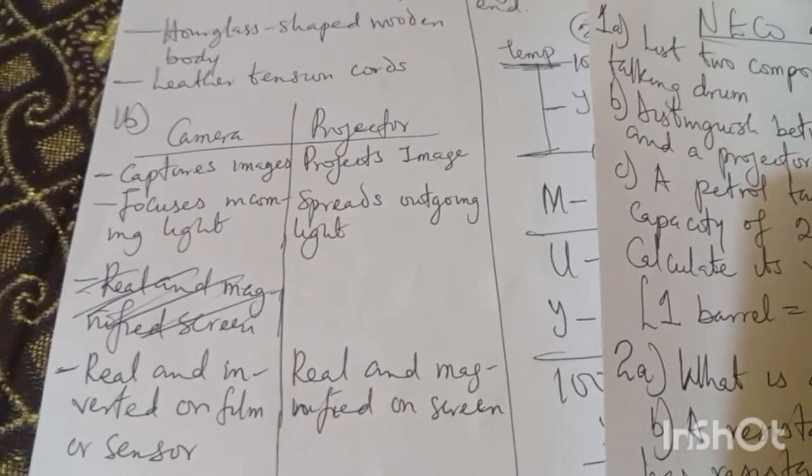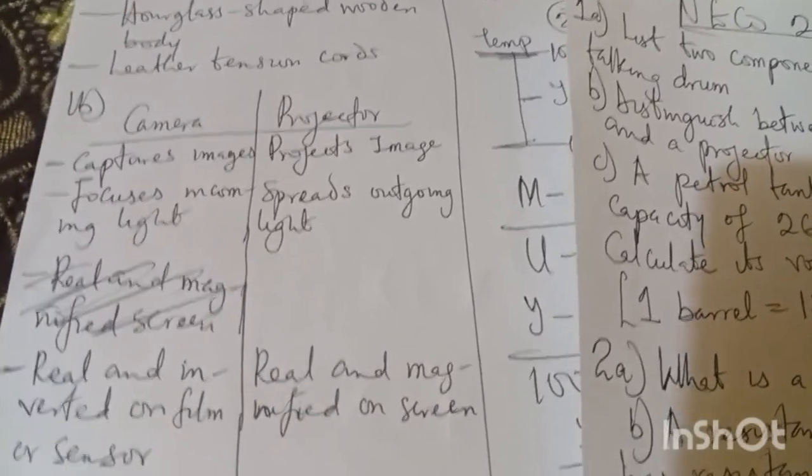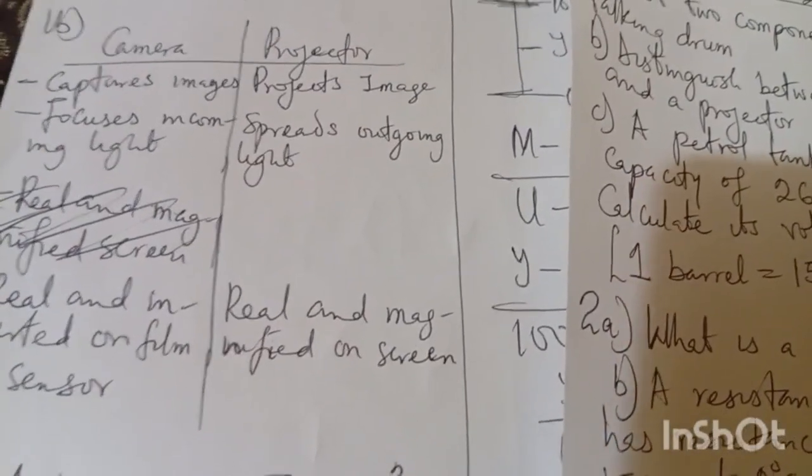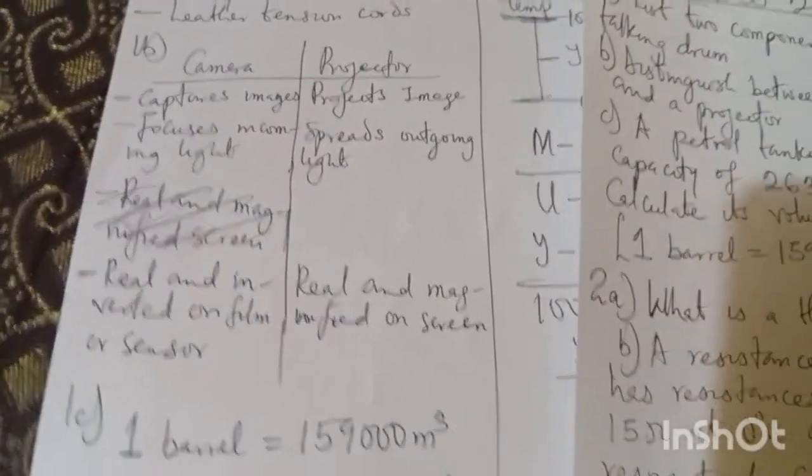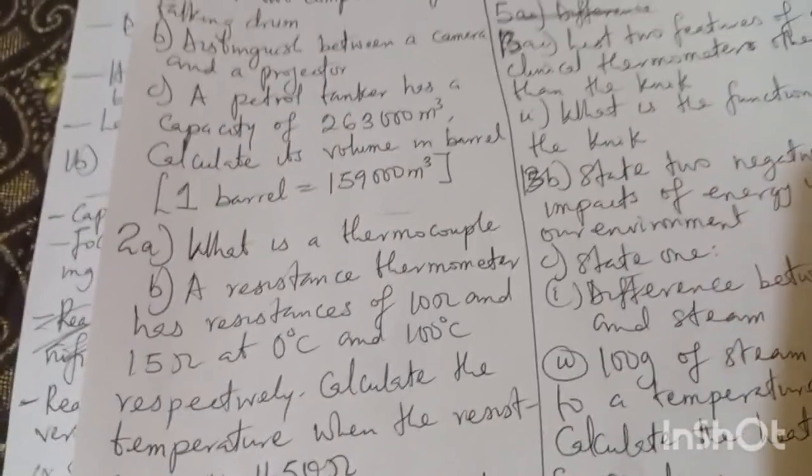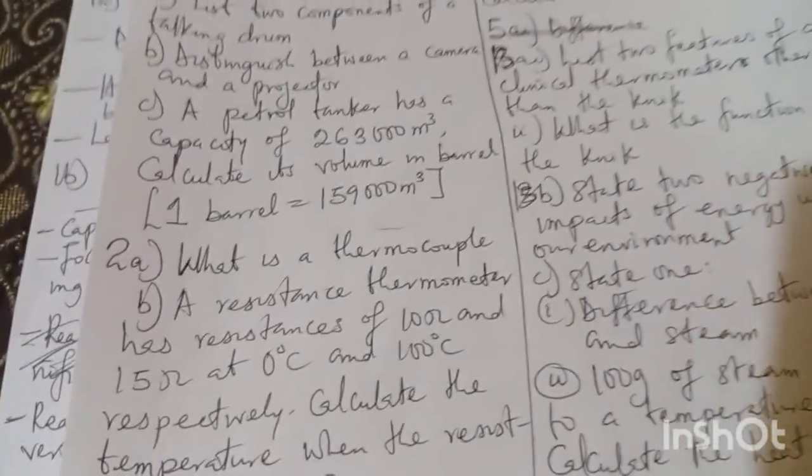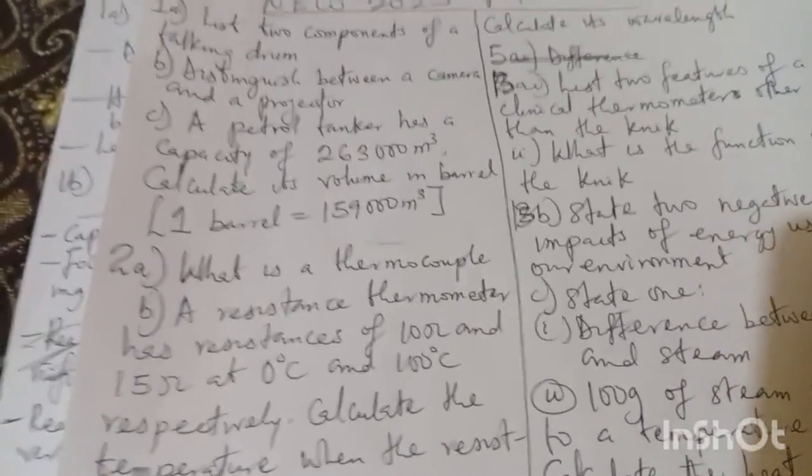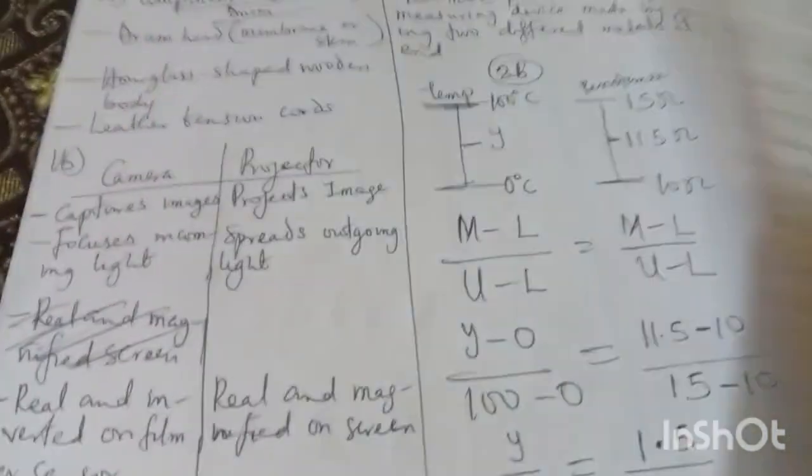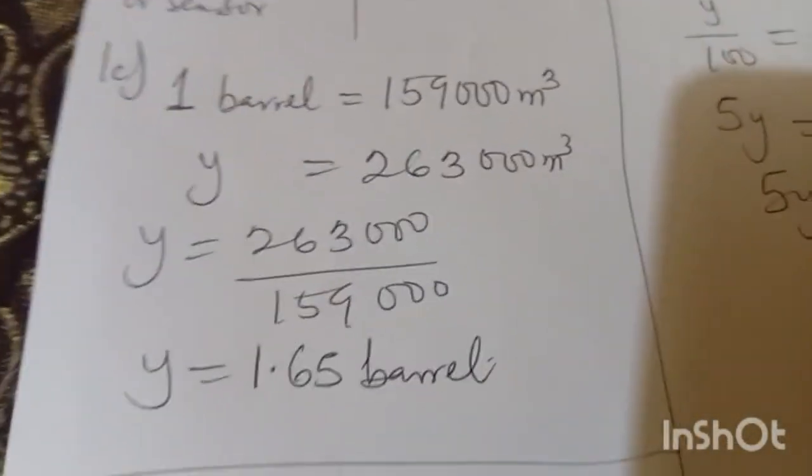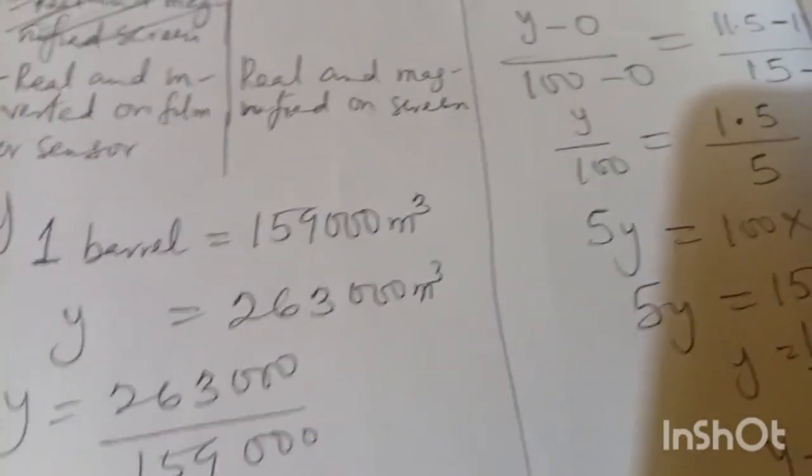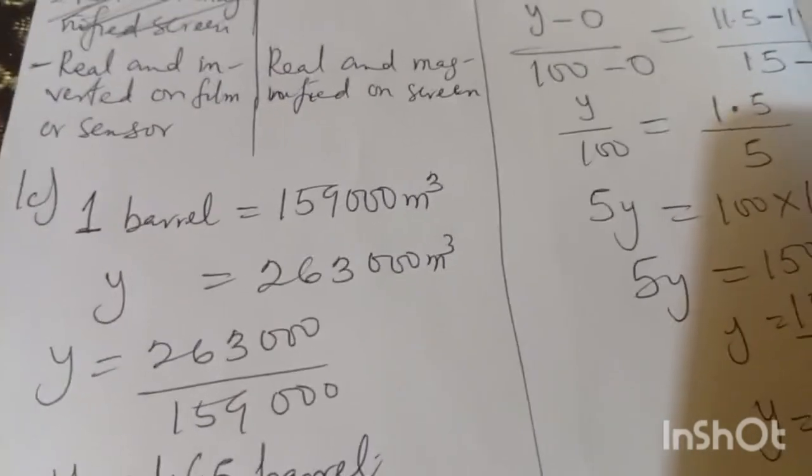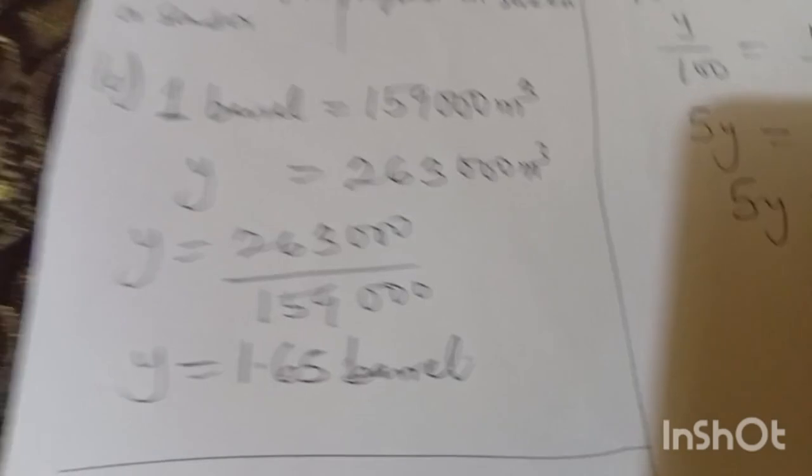I'm going to 1c. They give us a question saying that if one barrel is 159,000 cubic meters, how many barrels will give us 263,000 cubic meters? I answered it like this: one barrel equals 159,000, so I'm in barrel for that and I got 1.65 barrels. That's number one done, which I'm going to number two.